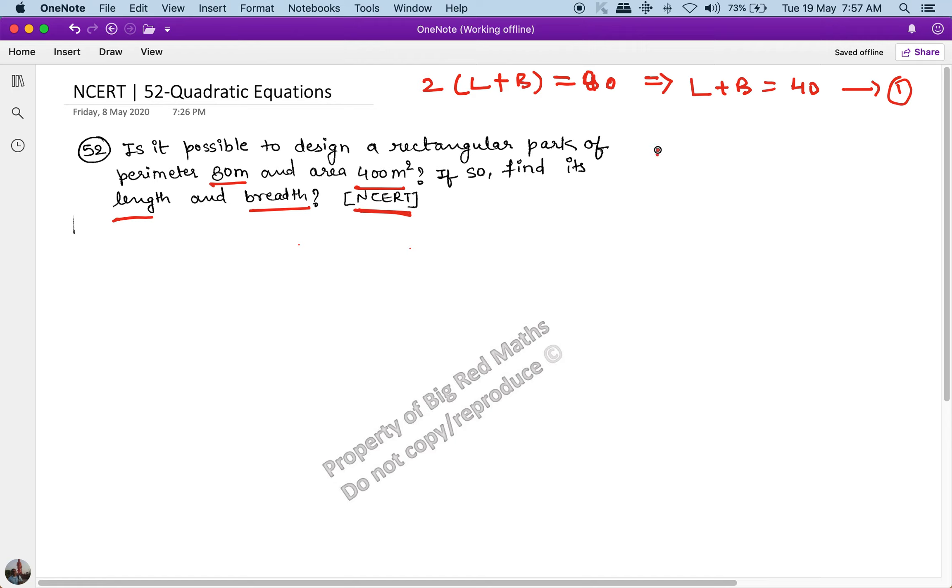Now area equals 400 meter square. We know that area equals length times breadth, which equals 400 meter square. This is one equation with two variables, so I cannot solve it directly.